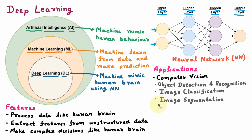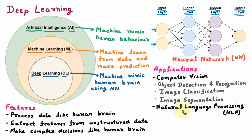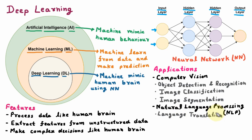The next application of Deep Learning is Natural Language Processing, also called NLP. Here, the computer processes natural language which is used by humans for communication. Under NLP there are various applications. The first one is Language Translation, where we can convert one language to another — like English to French, Japanese to Hindi, and so on.